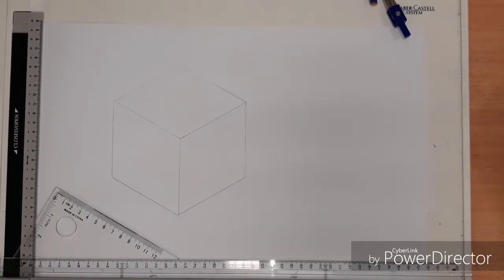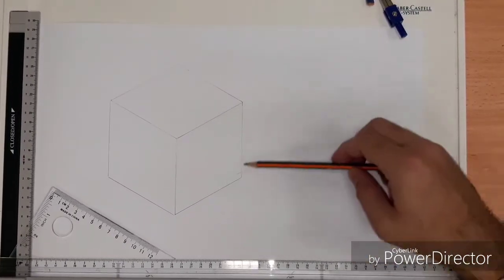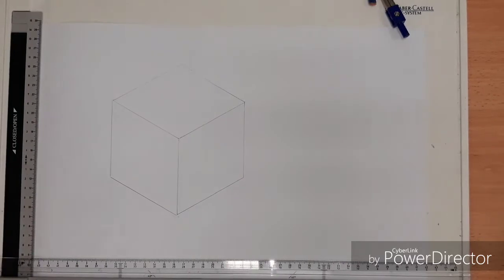Welcome to this year 11 revision video. Today I'm going to be showing you how to construct an isometric circle in a cuboid or a cube.